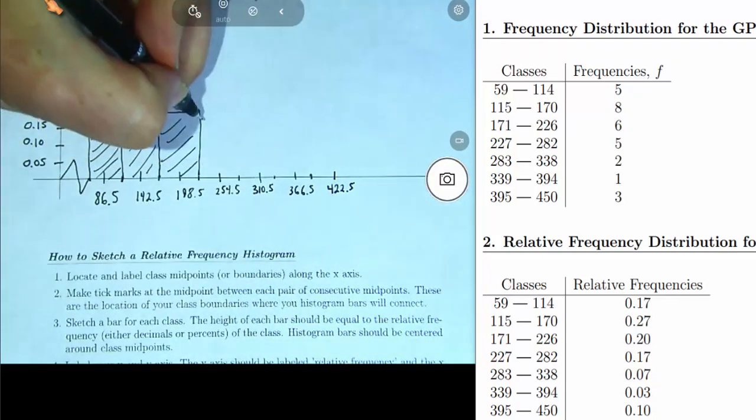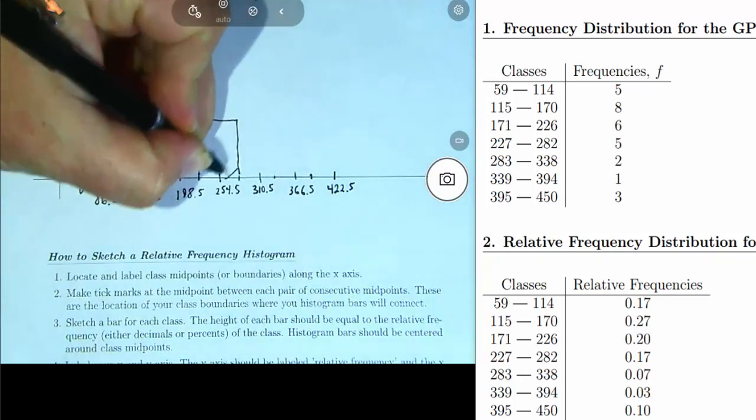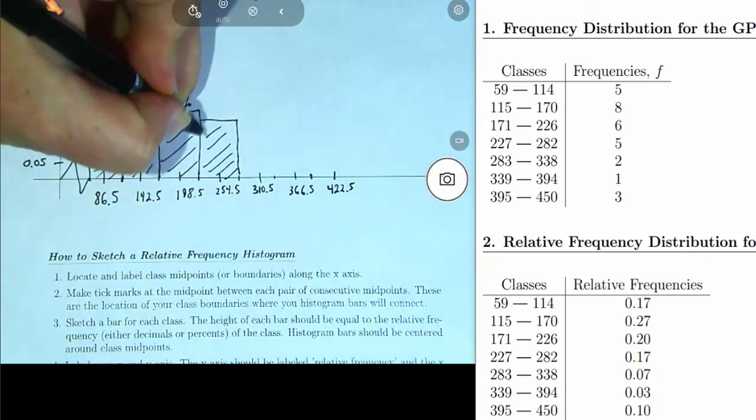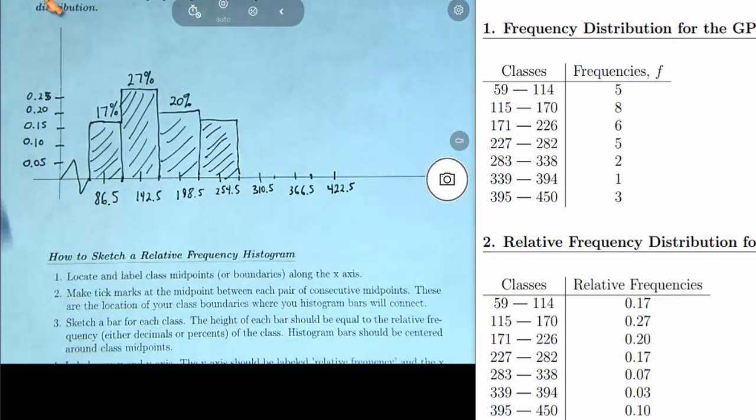And 17% again. So this graph type is just another way to visualize your data or visualize your table, which summarizes your data.